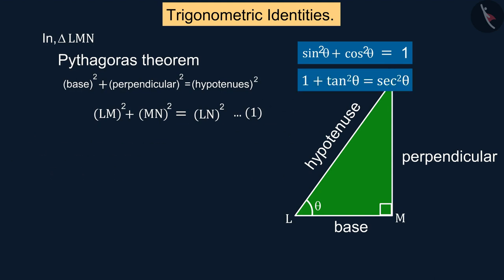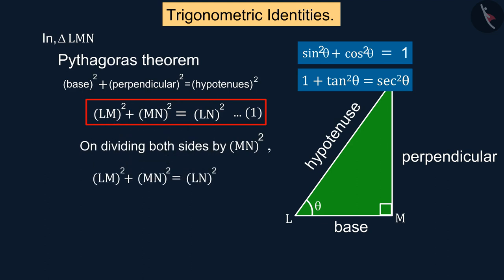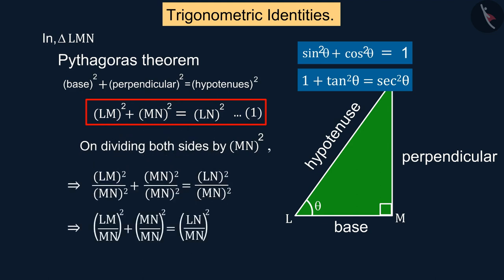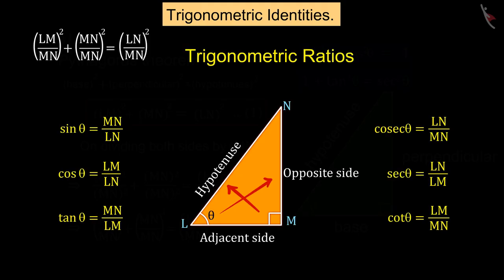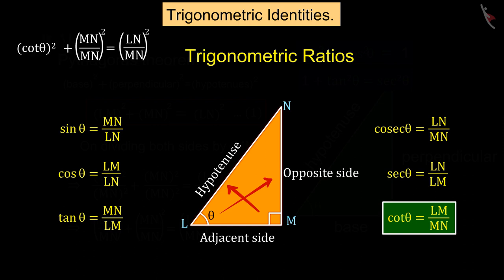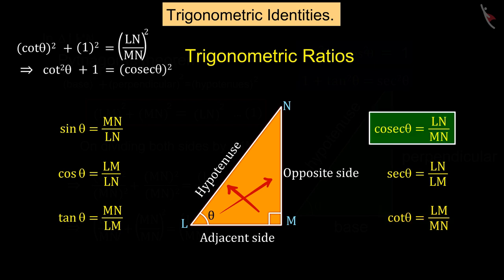Similarly, if the equation of the right triangle is divided by the square of MN, with the help of trigonometric ratios, we get LM upon MN equals to cot θ and LN upon MN equals to cosec θ.